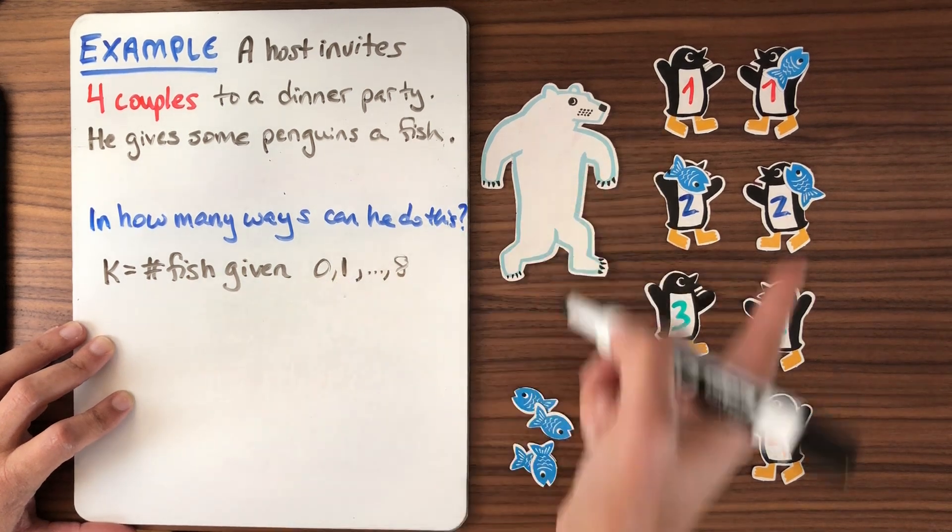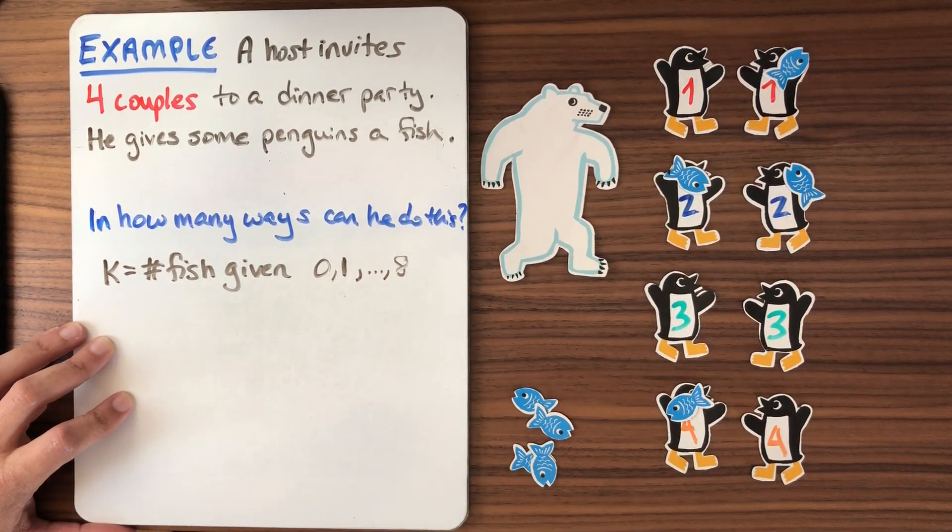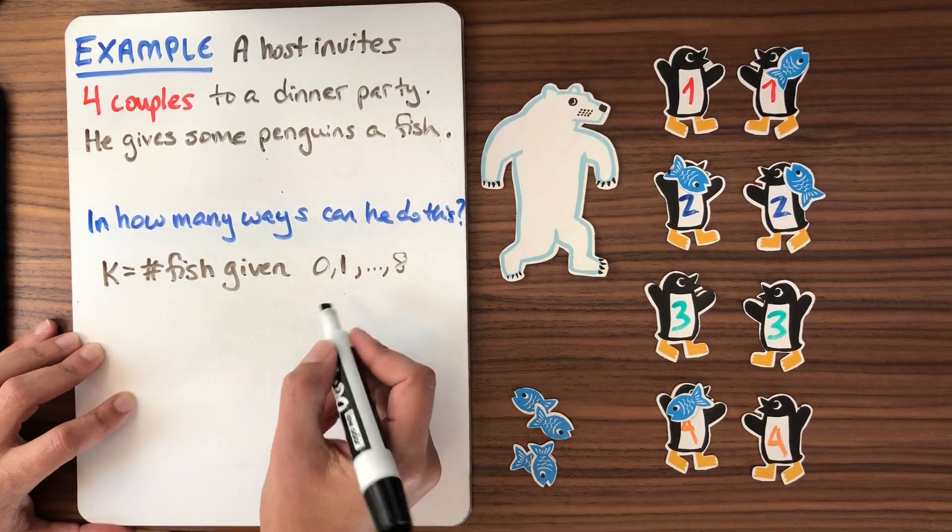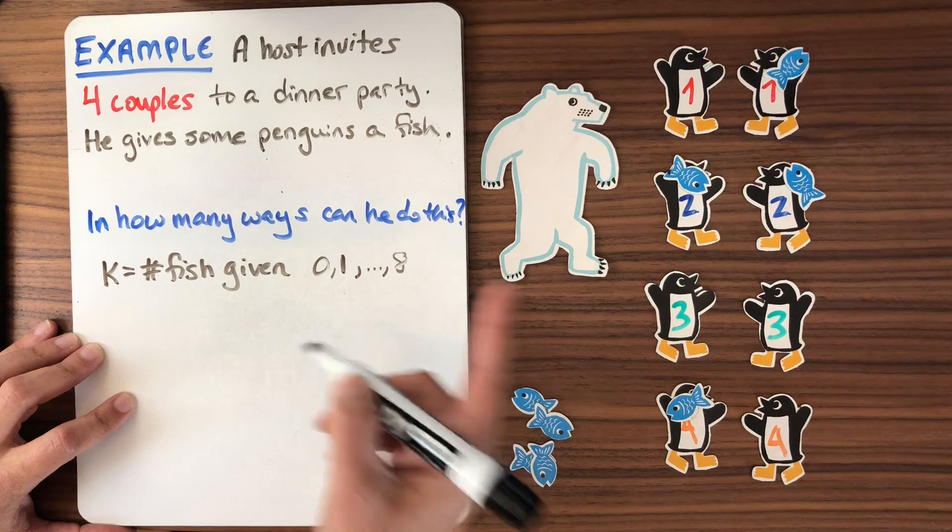If he gives out one fish, he chooses one. If he gives out six fish, he chooses six of the penguins. So we can write this down for each K, right? He has to make a choice of eight choose K.